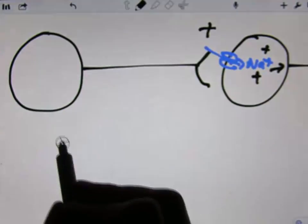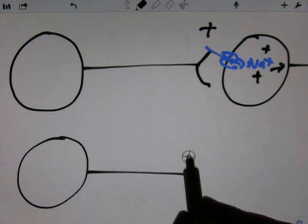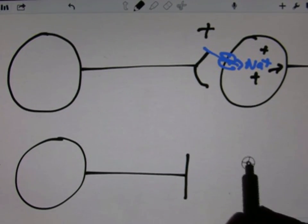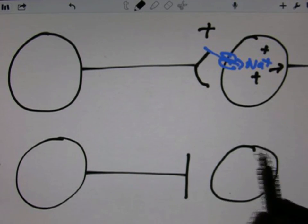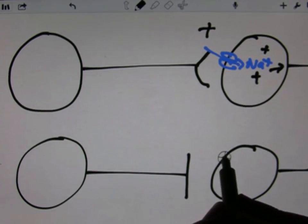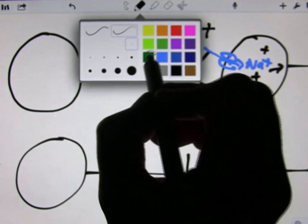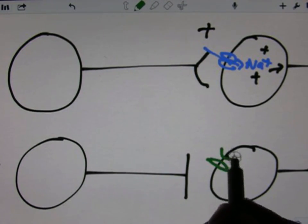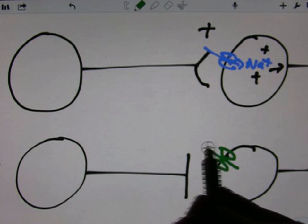Synapses can also be inhibitory, and the convention for inhibitory ones is usually to draw them as a bar. That might be, for example, if the neurotransmitter opens a potassium channel. Potassium, remember, will leave.